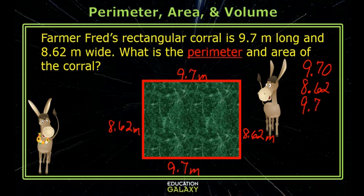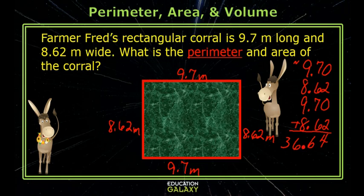That's good, Melvin. Here goes. When you add or subtract decimals, you bring your decimal point straight down. So my perimeter is 36.64 meters.